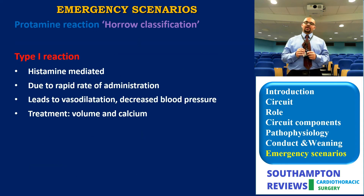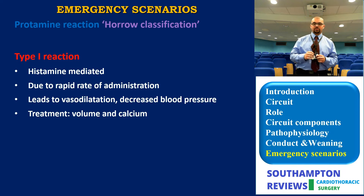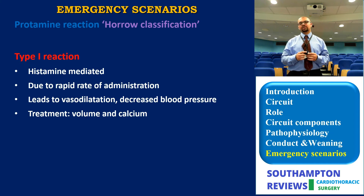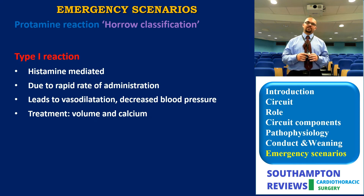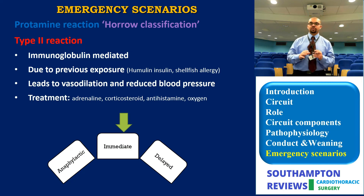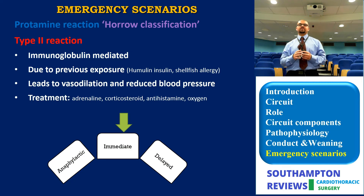Protamine reaction: the key is understanding which type of reaction is occurring using the Hora classification. Type 1 reaction is histamine-mediated due to rapid administration of protamine — the least severe of the three. It manifests as vasodilation and decreased blood pressure. Treatment: transfuse volume and administer calcium, which usually helps resolve this reaction.